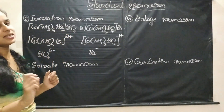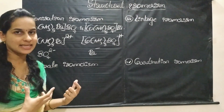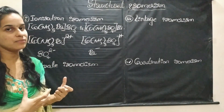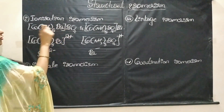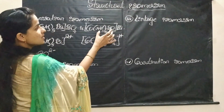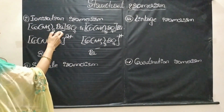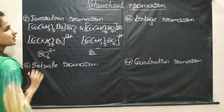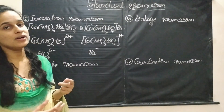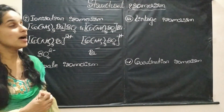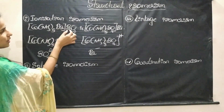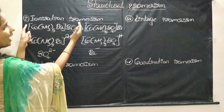In ionization isomerism, the counter ions present in the coordination complexes can act as potential ligands. SO4 or Br, if present as counter ions, can also act as potential ligands and displace the ligand present in the coordination sphere. SO4 can displace Br and form [Co(NH3)5SO4]Br, and Br is also a potential ligand. These two complexes have their own stability and the same molecular formula but ionize to give different ions. This phenomenon is called ionization isomerism — it is about the exchange of ions between the coordination sphere and the ionization sphere.